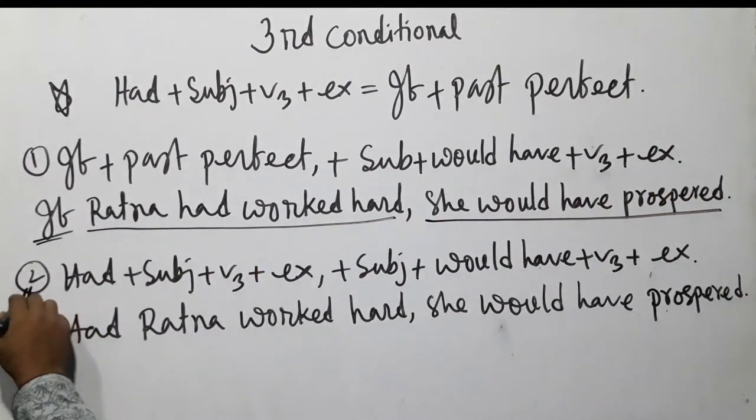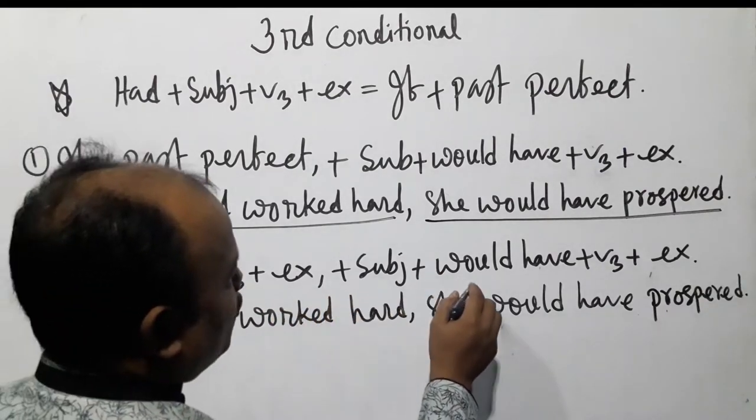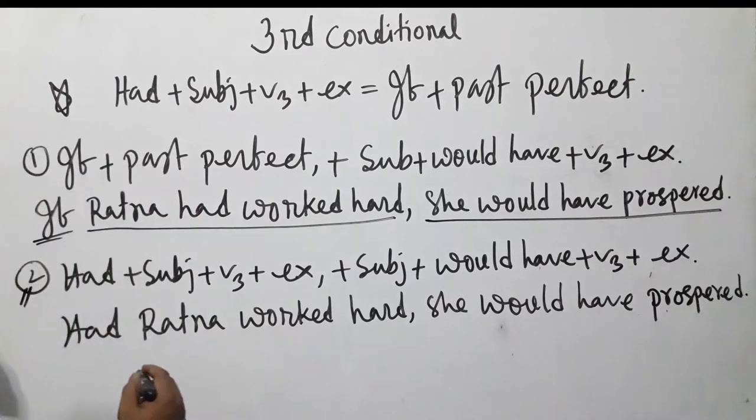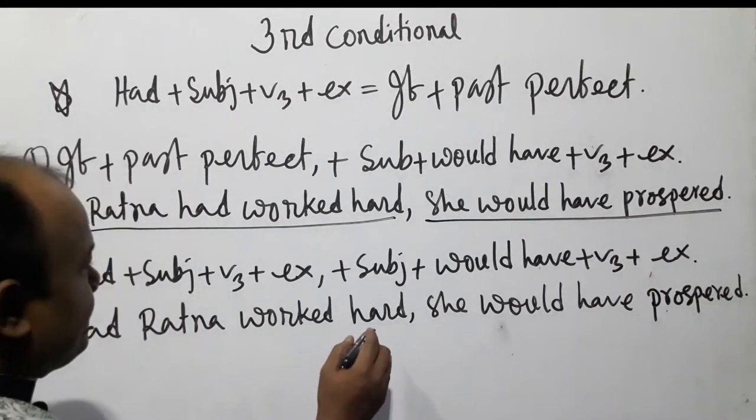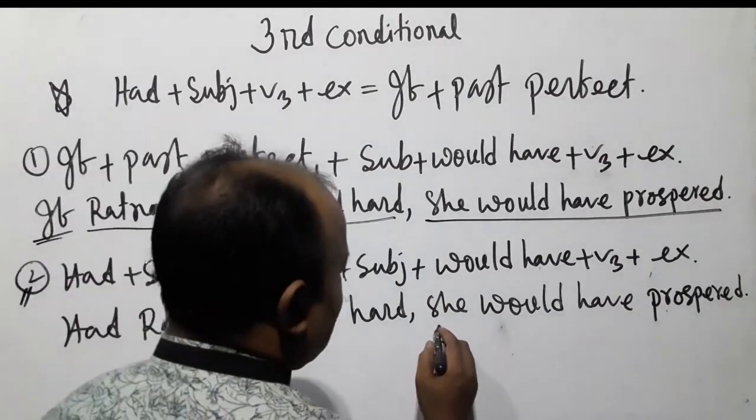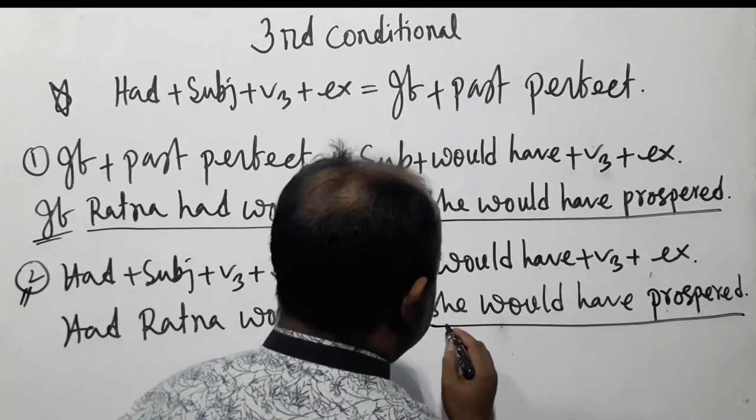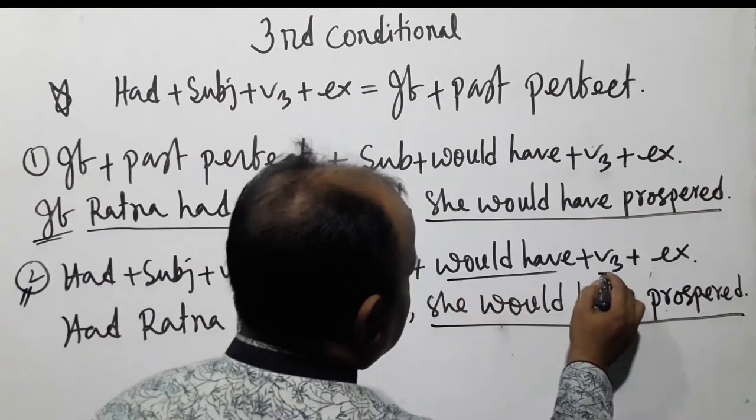Number two: had + subject + v3 + extension + subject + would have + v3 + extension. Had Ratna worked hard, she would have prospered. That means subject + would have + v3 + extension.